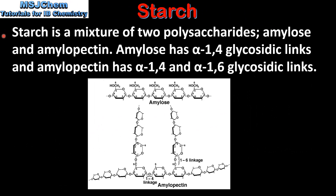Starch is a mixture of two polysaccharides: amylose and amylopectin. Amylose has alpha 1,4 glycosidic links, and amylopectin has alpha 1,4 and alpha 1,6 glycosidic links. Here we can see the structures of amylose at the top and amylopectin at the bottom. Amylose is a straight chain polymer while amylopectin is a branched chain polymer.